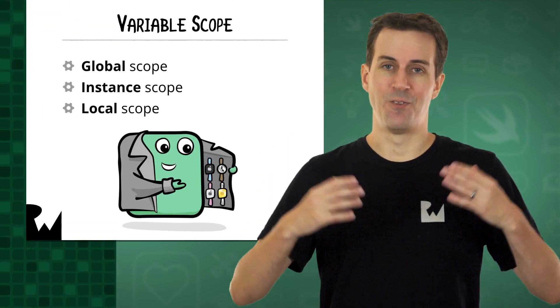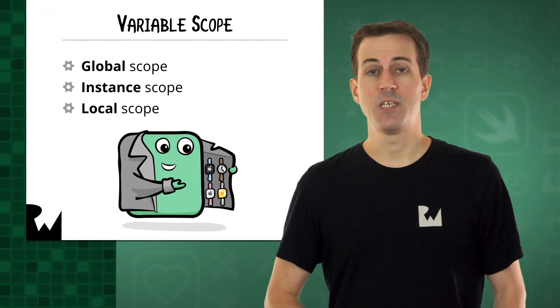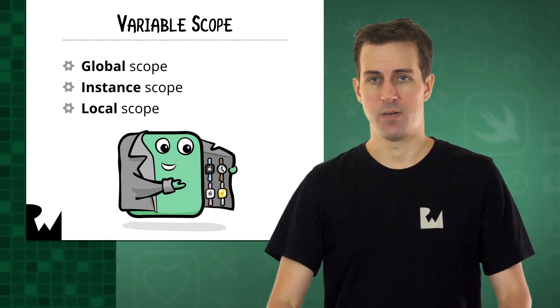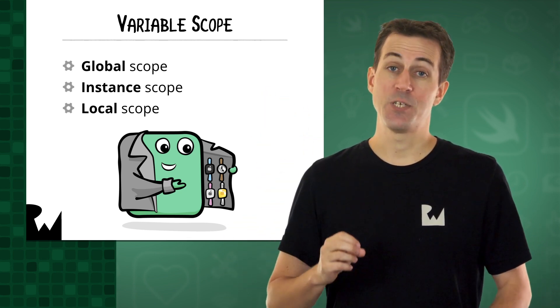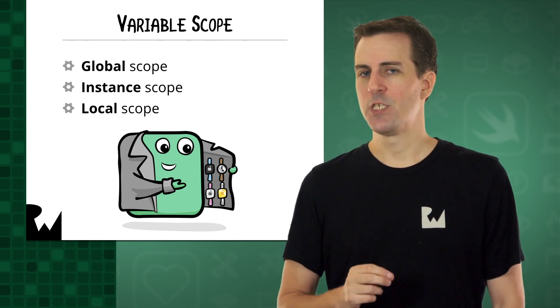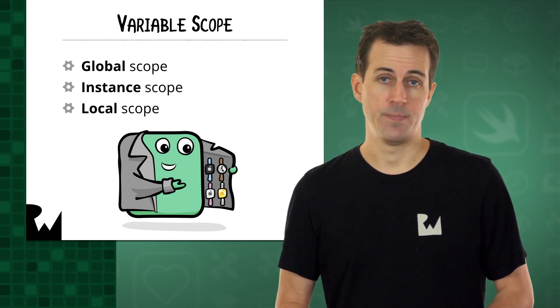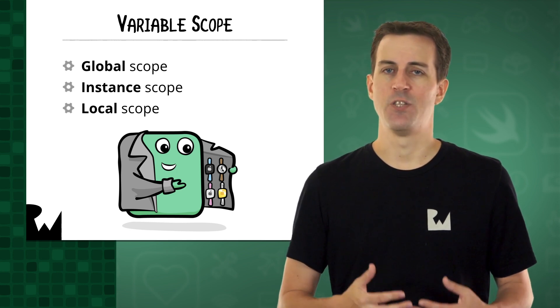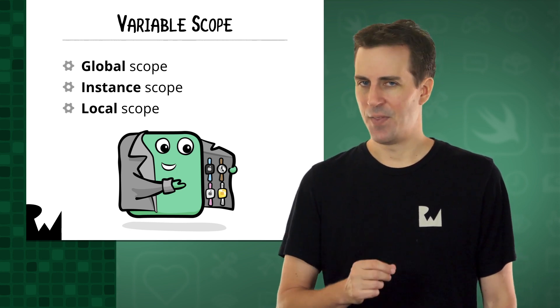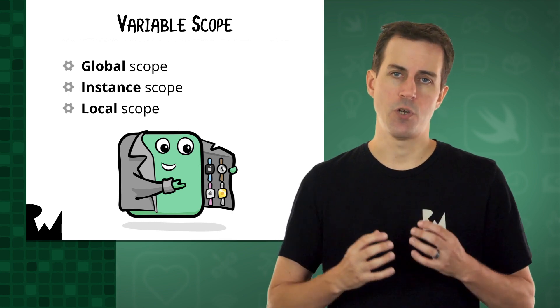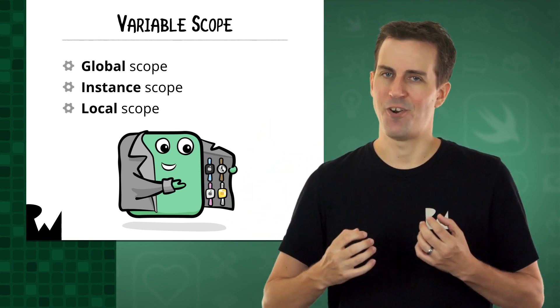In the lecture on variables, I mentioned that each variable has a certain lifetime known as its scope. The scope of a variable depends on where in the program you define it. There are three possible scope levels in Swift. First, there's global scope — these objects exist for the duration of your app and are accessible from anywhere. Second, there's instance scope, for variables such as your random target value. These objects are alive for as long as the object that owns them stays alive. In this case, ContentView owns target, so as long as ContentView is around, so is target.